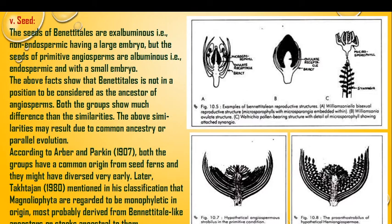In case of Bennettitales, the embryo is large and without any covering. The seeds found in Bennettitales are exalbuminous — that is, non-endospermic — having a large embryo. But the seeds of primitive angiosperms are albuminous, that is endospermic, with a small embryo. In primitive angiosperms, a small embryo is surrounded by endosperm, and that complete embryo and endosperm are again enclosed within a seed coat. Such arrangement is not present in Bennettitalian seeds. The above facts show that Bennettitales are not in a position to be considered as the ancestor of angiosperms.